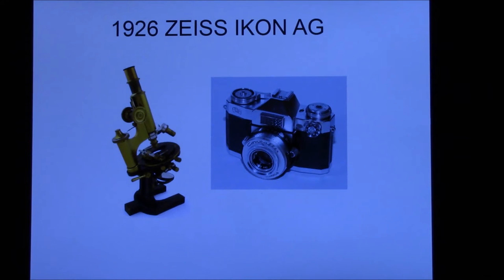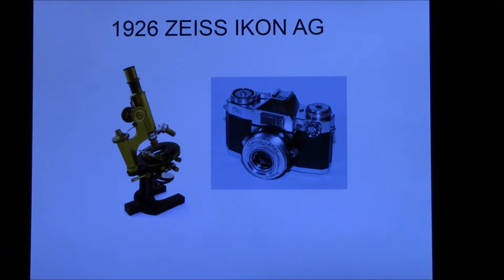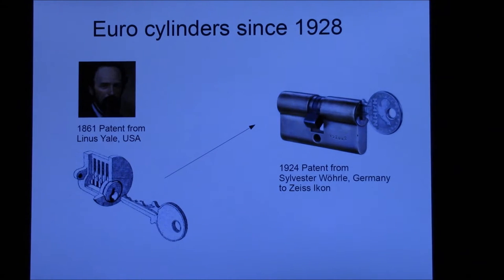Later on, in 1926, the Zeiss Icon company was built and they also made other optical instruments or products, for example cameras. Again later they started making locks.